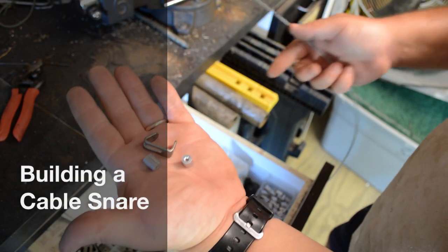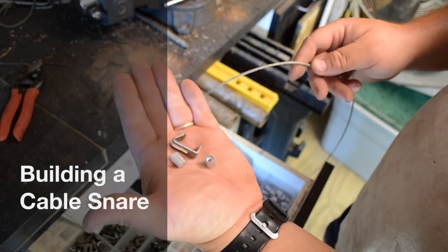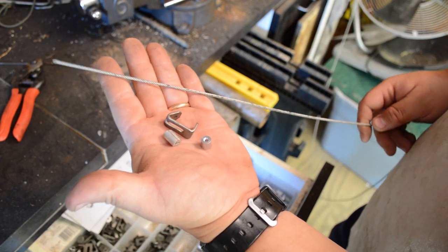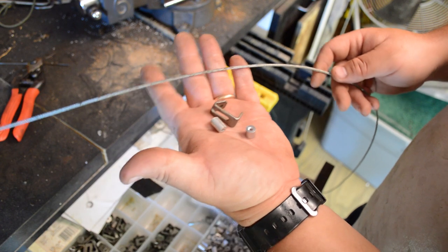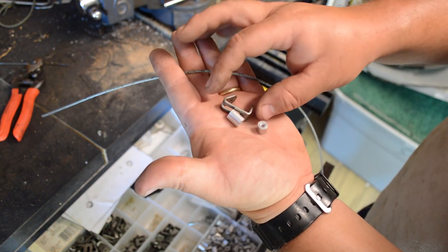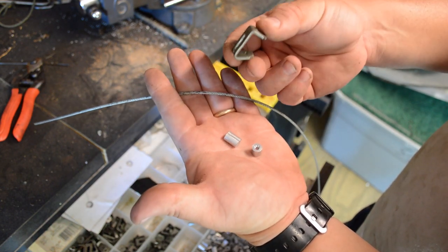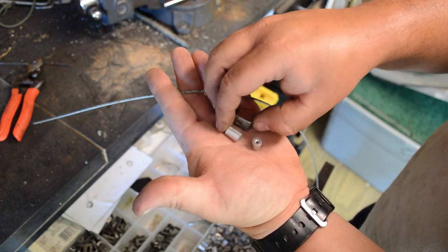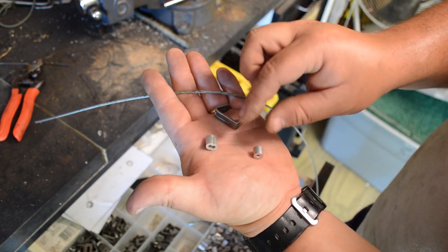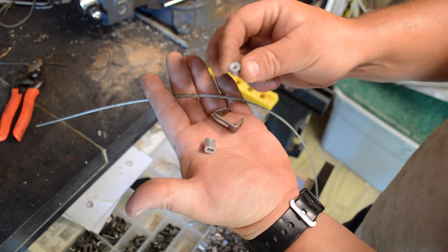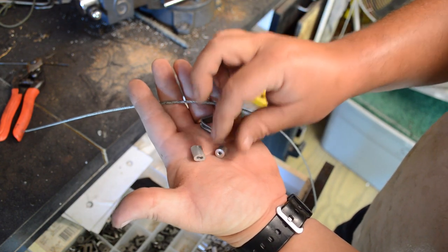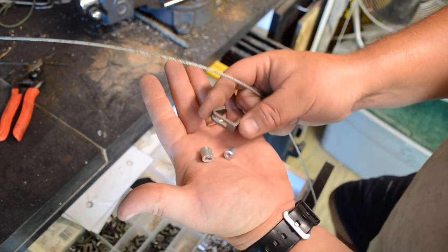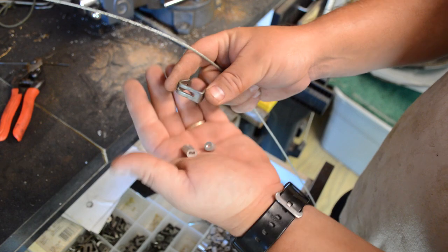These three parts are what you're going to need. This is a 7x7, 3/32nd aircraft wire. What I've got here today is a Sherlock lock for a snare, a double ferrule. All these are 3/32nd. You've got a single ferrule. I'm going to show you how to make a snare. You can make them as long or as short as you want, but this is how to do it for 3/32nd.